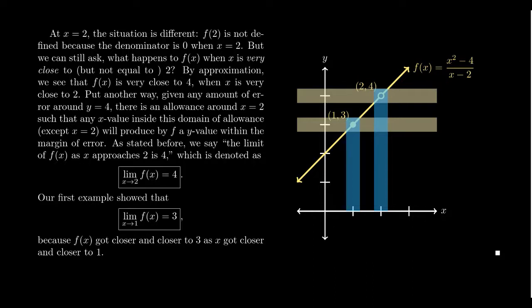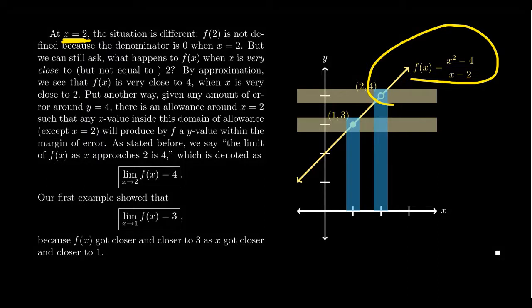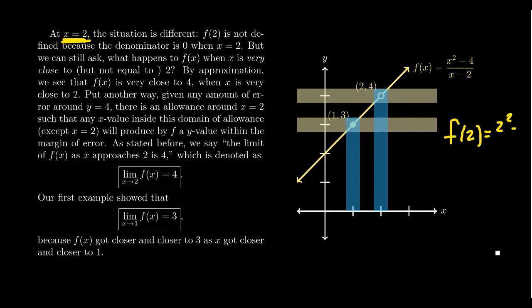There are settings where we can't evaluate the function, but we can still talk about closeness. Let's take the same function and transition to the number x equals two. If you plug in two, you get f of 2 equals two squared minus four over two minus two. You end up with getting zero over zero. We just divided by zero. This function is undefined at x equals two. f of two does not exist.